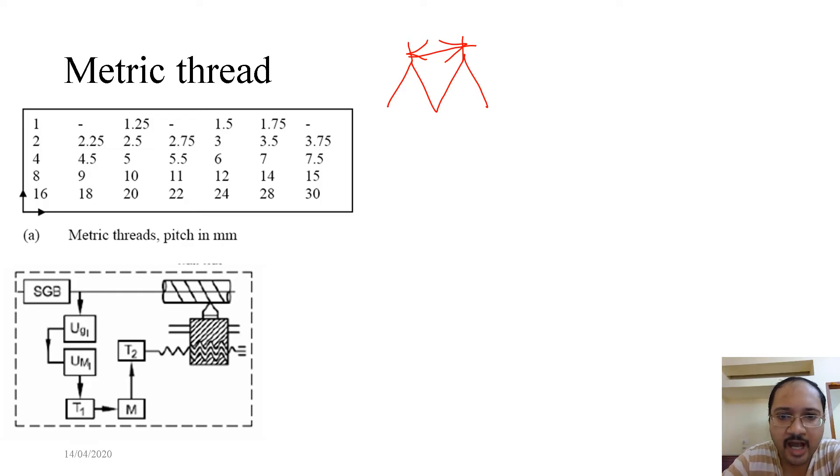Now how do we arrive at these 32 combinations of metric thread? That is explained through this schematic. We see how the torque is transmitted. At each level, there are a number of gear transmission ratios.